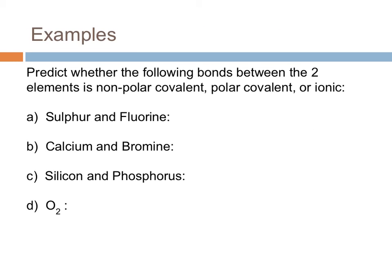So let's just look at a couple more examples then. We're going to look at whether the bond between these is nonpolar covalent, polar covalent, or ionic. So if we take a look at sulfur, sulfur is 2.5 and fluorine is 4.0. If we take the difference, we're going to take 4 minus 2.5, gives us 1.5, which would be a polar covalent bond.